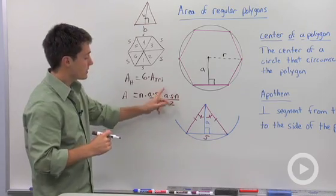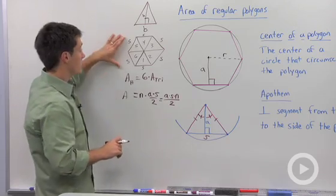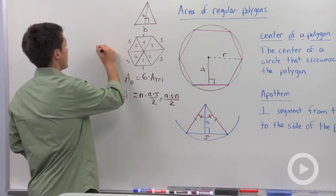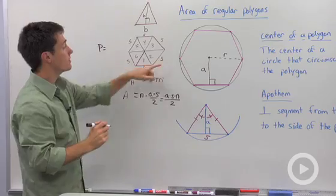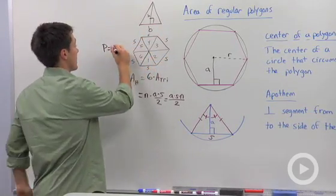Now, if we look at this, I see that I can simplify this a little bit more. Getting back to our regular polygon, the perimeter, capital P, of this polygon is going to be one, two, three, four, five, six S.